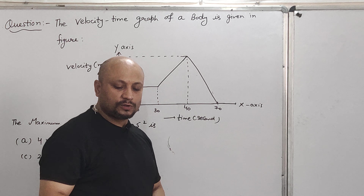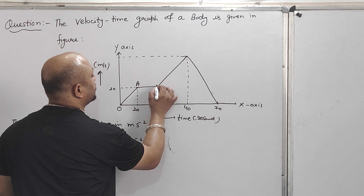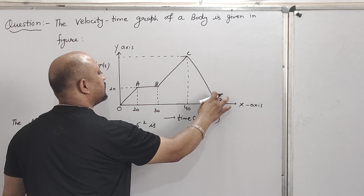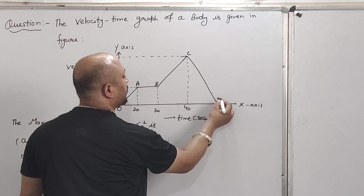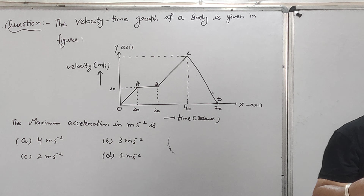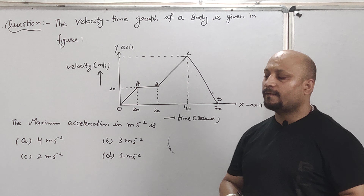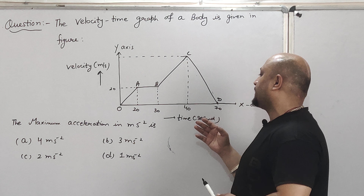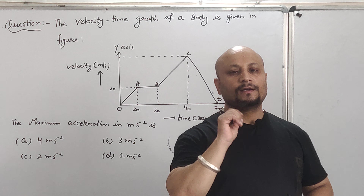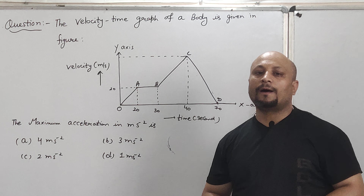Inside this graph, you can see four parts. The first part is OA, the second part is OB (AB), the third part is BC, and the fourth part is CD. In these four parts, we have to identify where the maximum acceleration is and how much it is. The y-axis shows velocity and the x-axis shows time.